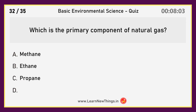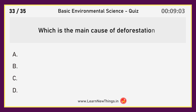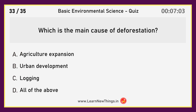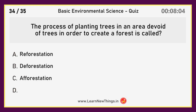Which is the primary component of natural gas? Methane. Which is the main cause of deforestation? All of the above. The process of planting trees in an area devoid of trees in order to create a forest is called afforestation.